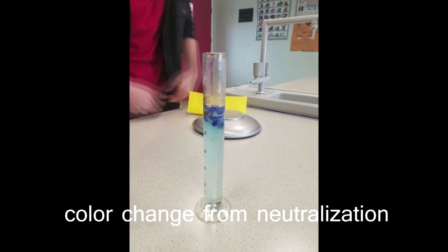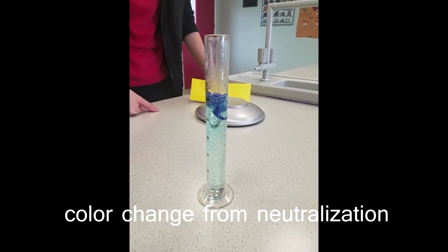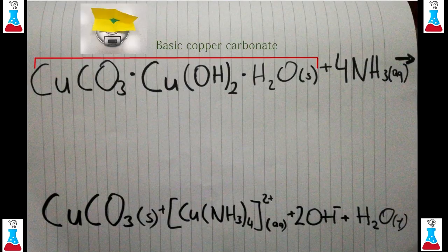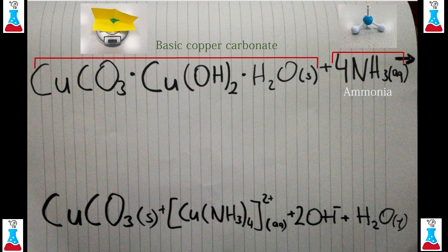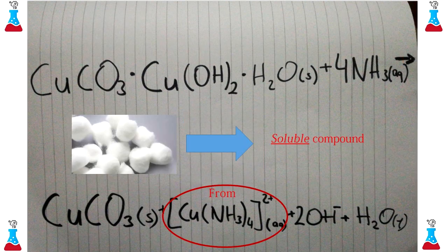This slowly turns white as the acid neutralizes the alkaline tetraamine copper solution and destroys the complex. The first step in the demonstration is a reaction of basic copper carbonate with aqueous ammonia to form tetraamine copper ions. When insoluble cellulose is added to this solution, it is converted to a soluble complex compound.